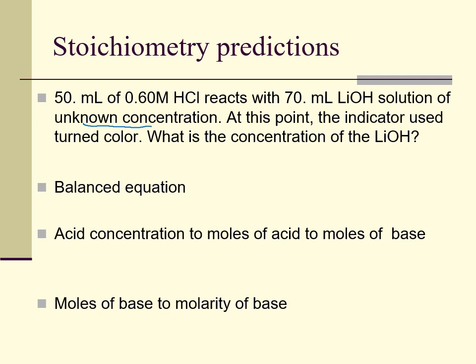Here are the steps. First, you have to start with a balanced equation if we're going to predict this on paper. Then use the known concentration — convert it to moles — and then go through stoichiometry to find moles of your unknown substance. Today I know the acid and don't know the base, so I'm starting with acid concentration. Whatever your known is, that's what you start with, using your volume information to get to moles. Then stoichiometry gets you from moles of your known to moles of your unknown. Once you have the moles of your unknown, you can figure out the unknown concentration.